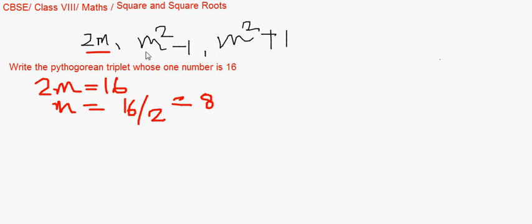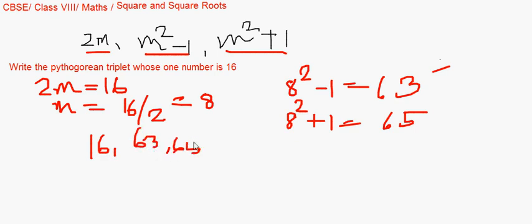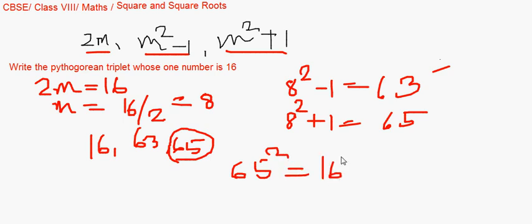Now when m is 8, we substitute into m squared minus 1: that becomes 8 squared minus 1, which is 64 minus 1, giving 63. So the three numbers of the Pythagorean triplet are 16, 63, and 65. You can verify this using the Pythagorean theorem: 65 being the largest is the hypotenuse, so 65 squared should equal 16 squared plus 63 squared.